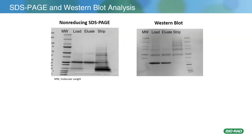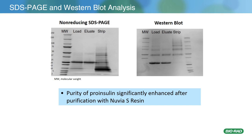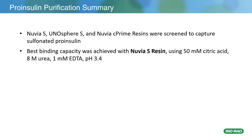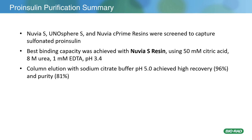Here you're looking at the non-reducing SDS-PAGE and western blot of the load, eluate, and strip fractions. As you can see, Nuvia-S does a really good job of cleaning up the proinsulin, and purity is significantly enhanced after Nuvia-S chromatography. In summary, Nuvia-S, Unisphere-S, and Nuvia-C Prime were screened to capture proinsulin. The best binding capacity was achieved with Nuvia-S using 50 millimolar citric acid, 8 molar urea, 1 millimolar EDTA, pH 3.4. Column elution with sodium citrate buffer at pH 5 gave a high recovery of 96% and a purity of 81%.